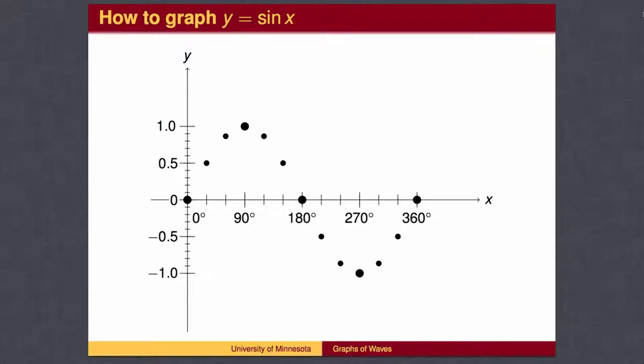The sine of 60 degrees is √3/2, which is approximately 0.866, so we can place the points for 60°, 120°, 240°, and 300°.